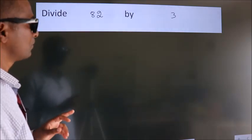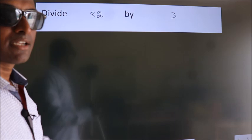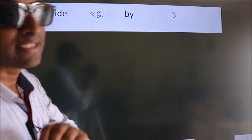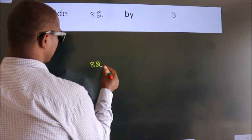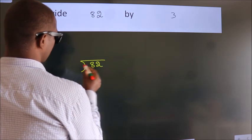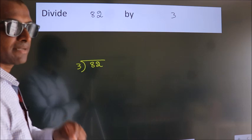Divide 82 by 3. To do this division, we should frame it in this way. 82 here, 3 here. This is your step 1.